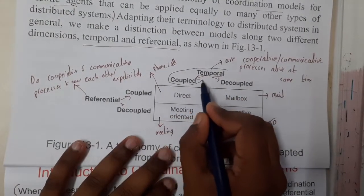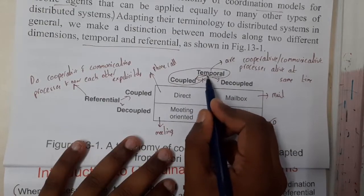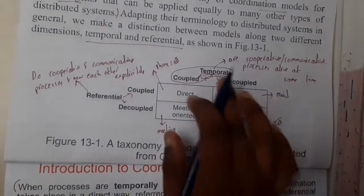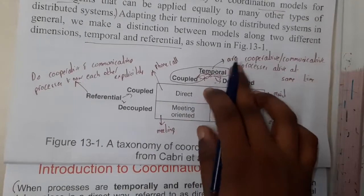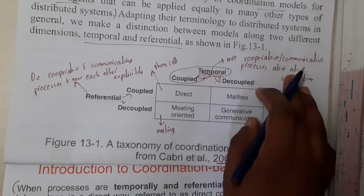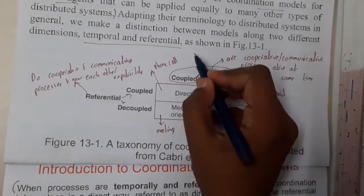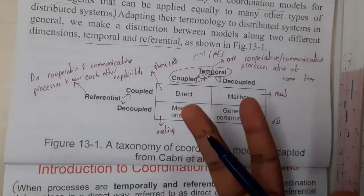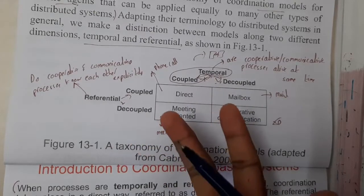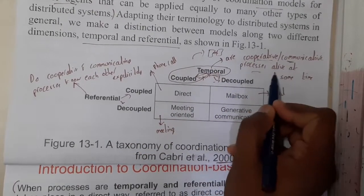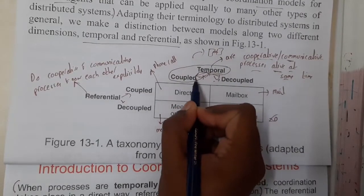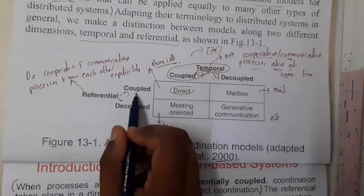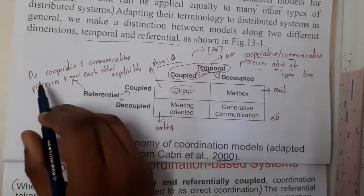Coupled means true, decoupled means false. Temporal coupled means both processes are alive at the same time. Example: you called your friend and you are both talking — it's two-way communication, both alive at the same time. You also both know each other, so this is referentially coupled too. A phone call falls under temporally coupled and referentially coupled.